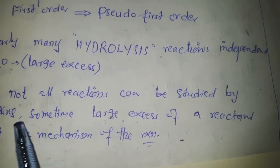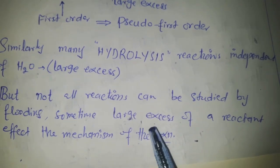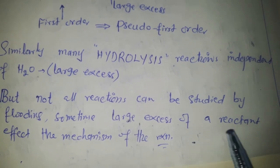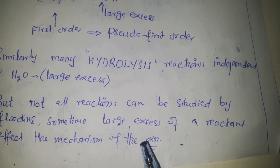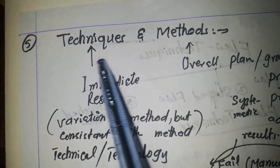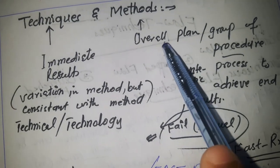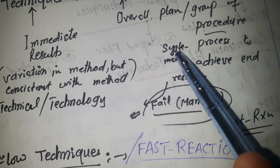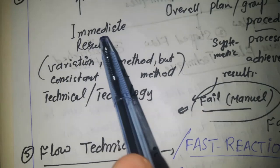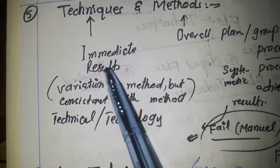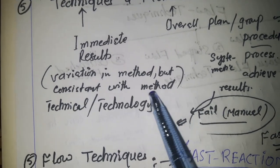However, not all reactions can be studied by the flooding method, because taking both reactants in large excess can cause the reaction to follow a different mechanism. At this point, we distinguish between methods and techniques: a method is a systematic process to achieve a final result, while a technique gives immediate results and is consistent with the method, often coming from technology.